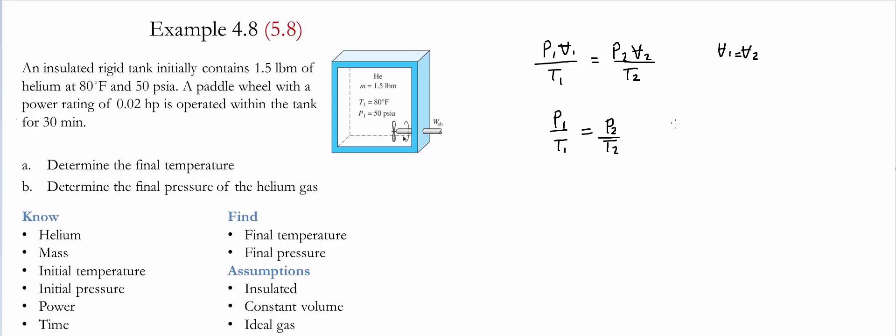Since we're looking for pressure 2, pressure 2 is simply P1 divided by T1 times the temperature T2. And then we set P2 equals 50 PSIA divided by the initial temperature, which is 540 rankine, and we multiply it by the final temperature, which is 562.5 rankine. We find that the final pressure is given to be 52.1 PSIA.